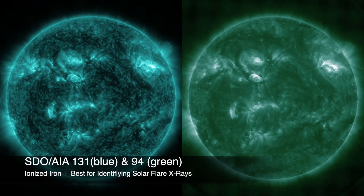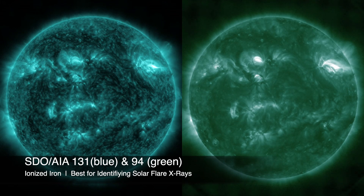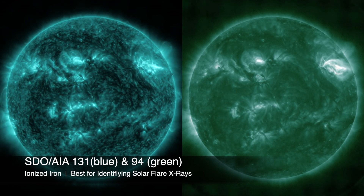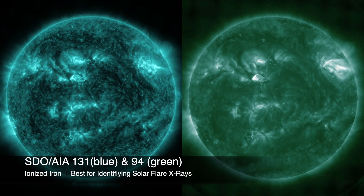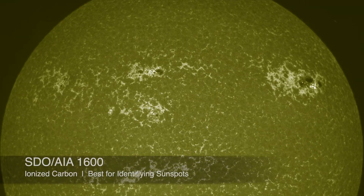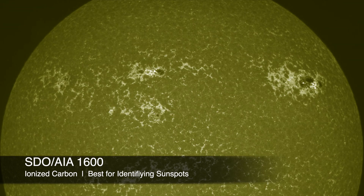If you are looking to identify solar flares, you want either the blue 131 or the green 94 angstrom view — still ionized iron — and the brightest flashes or X-ray emission of those solar flares.